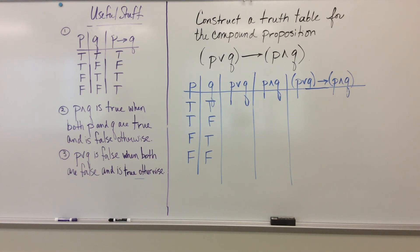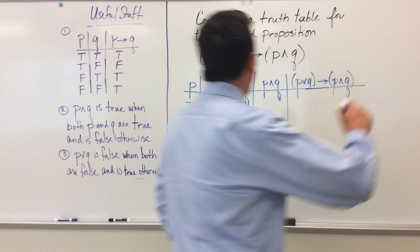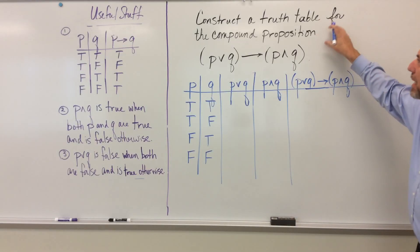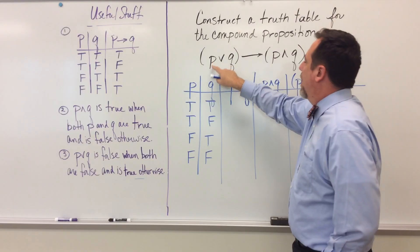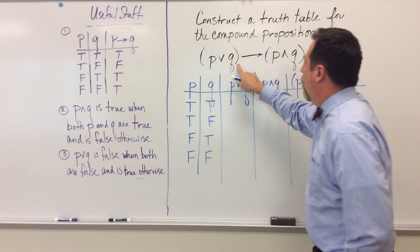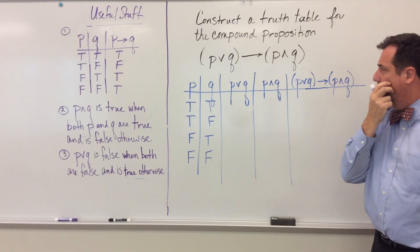Okay, I'm going to solve this problem that I have up here. It says I need to construct a truth table for the compound proposition if P or Q, then P and Q.